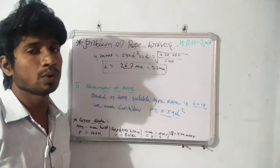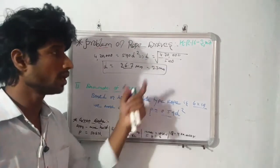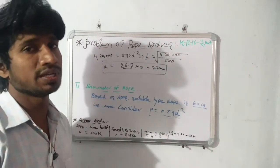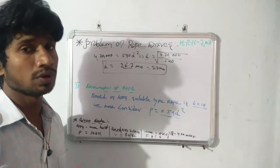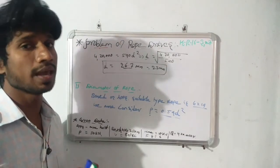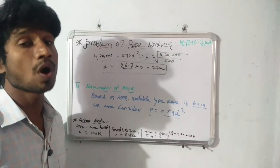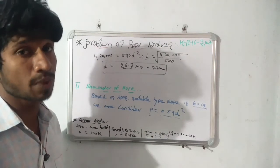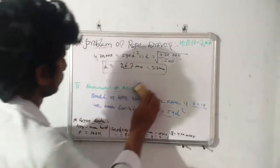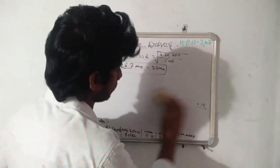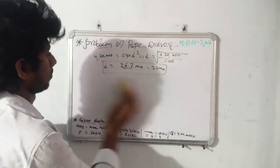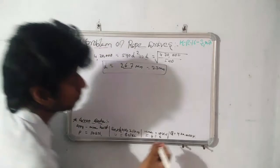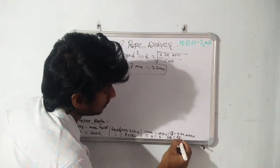After finding the diameter, we are going to find the required parameters for the 6×19 type rope, including diameter of wire, area of rope, and drum or pulley diameters in minimum and optimum conditions. The diameter of rope d is equal to 27 mm.